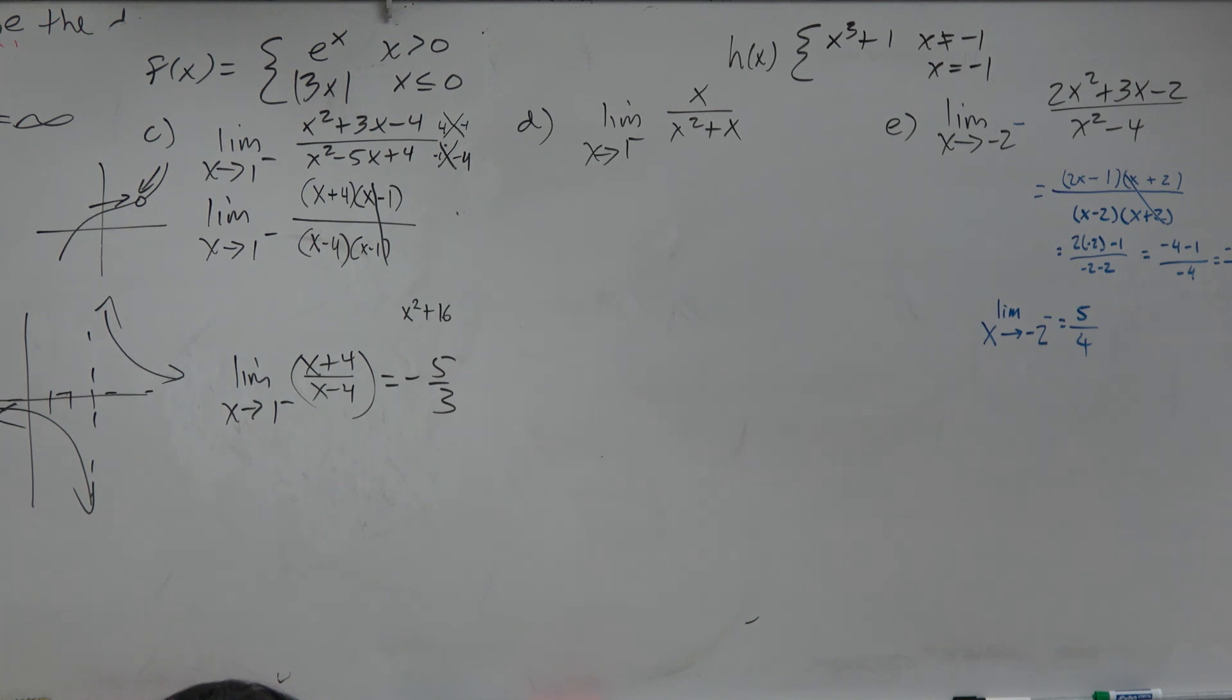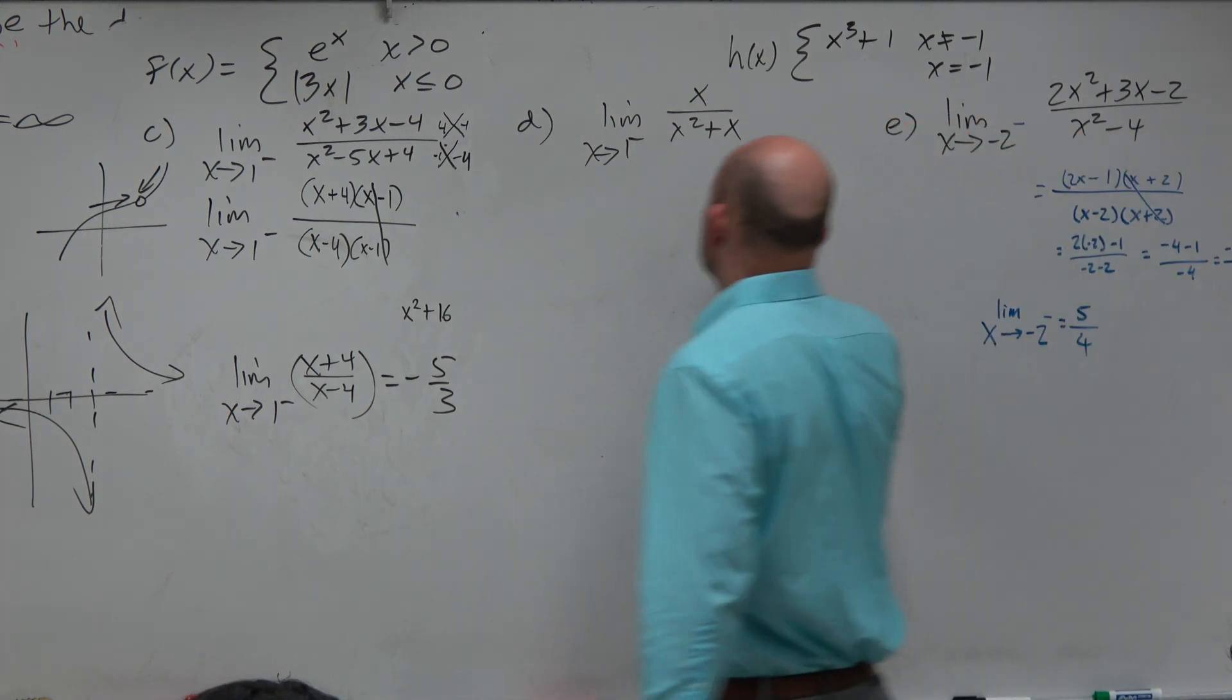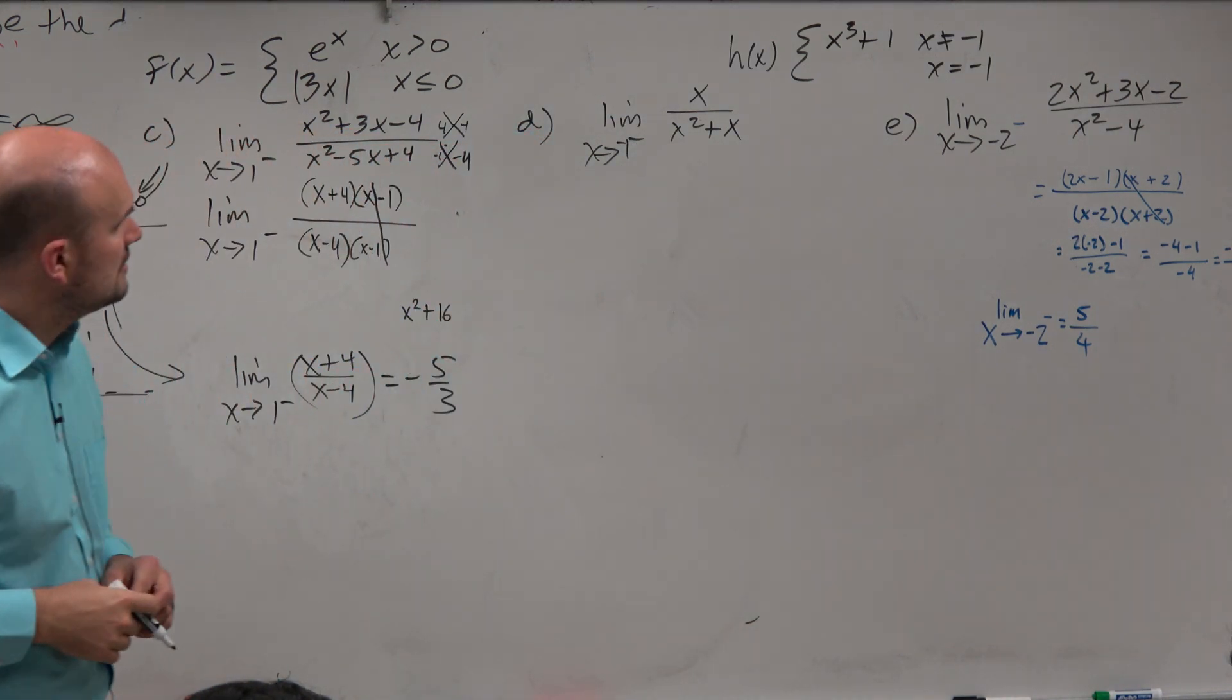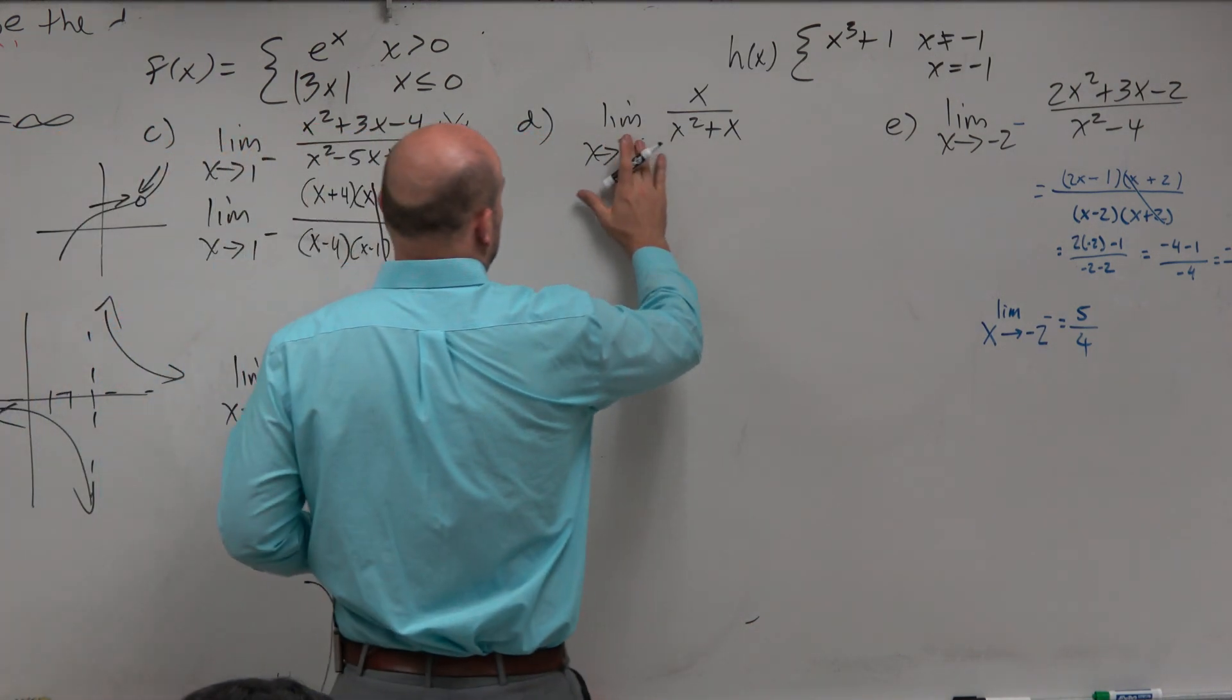So in this first one, we have x approaches 1 from the left. And if you, that's supposed to be a negative 1. Sorry about that. That was supposed to be a negative 1 from the left. I wrote that wrong.